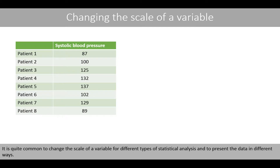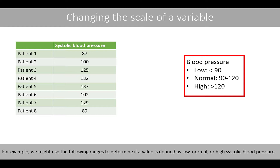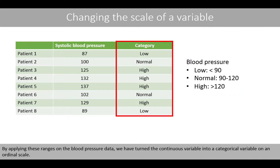It is quite common to change the scale of a variable for different types of statistical analysis and to present the data in different ways. For example, let's say that we have measured the upper blood pressure of 8 patients. We now like to categorize these values into low, normal, and high blood pressure. We might use the following ranges to determine if the value is defined as low, normal, or high blood pressure. By applying these ranges on the blood pressure data, we have turned the continuous variable into a categorical variable on an ordinal scale.